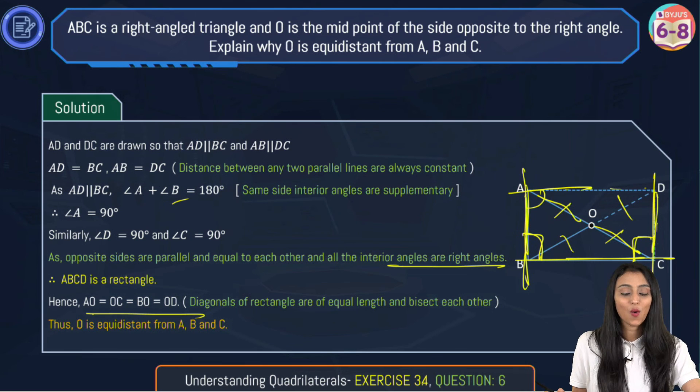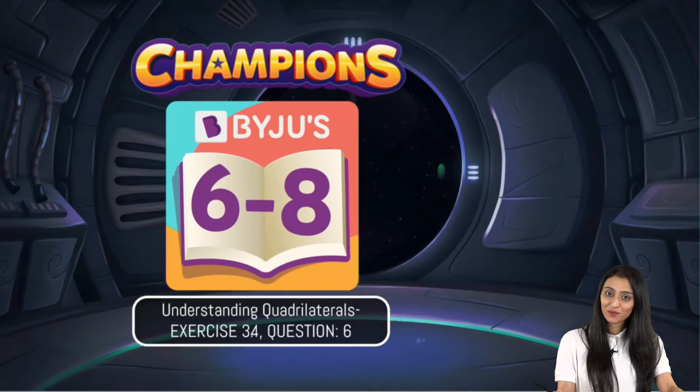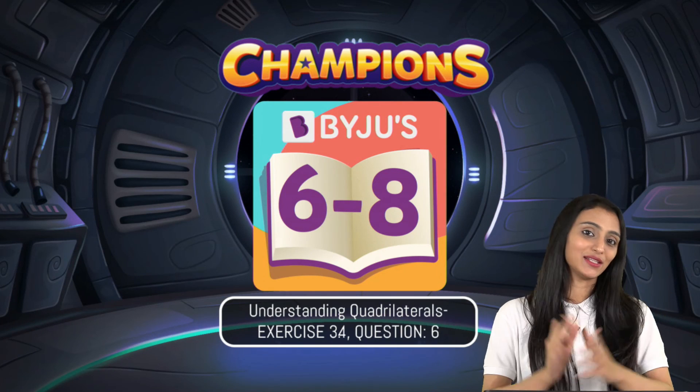Hence O is equidistant from all these three points A, B, and C. Now leave a comment for me in the comment section—how you like this question?